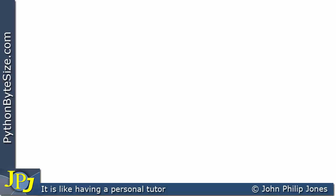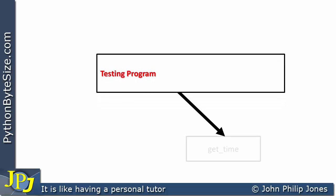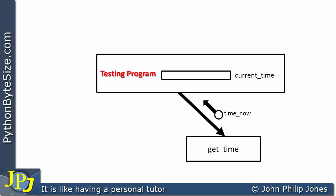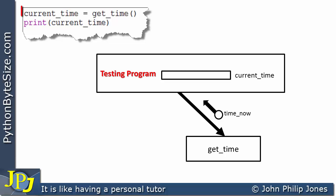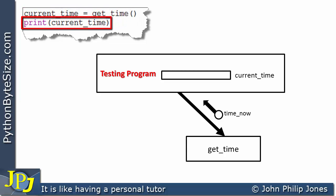We've just looked at code that finds the time, but now we want this code to be the mechanics of a function — because that's what this video is about: a function that returns a value but doesn't take any input parameters. To achieve this, we're going to have a testing program that calls a function called getTime, and we're going to have the time returned to the testing program as 'time_now'. The testing program must have a variable capable of receiving what's returned from getTime, which I'll call current_time. So current_time is assigned getTime(), and then we print current_time to verify the function behaves as expected.